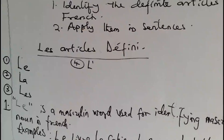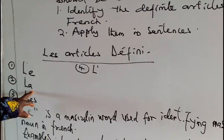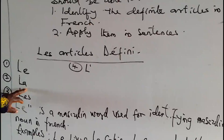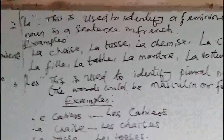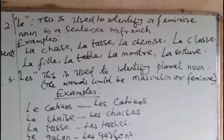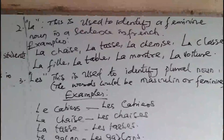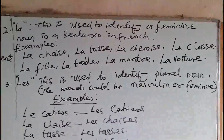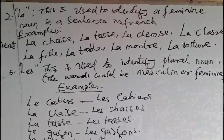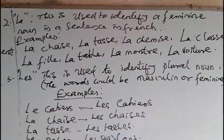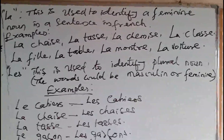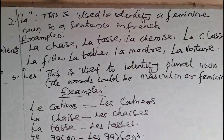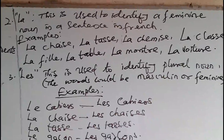Now we continue with number 2, which is «la». La is a feminine article that is used to identify feminine words in French. As I said earlier, you don't use masculine articles to identify feminine nouns — it's not done. Masculine goes with masculine nouns and feminine articles go with feminine nouns. Note that le and la are singular articles. We are going to see the plural article when we come to number three. For now, the singular article «la» is used to identify singular feminine nouns only.